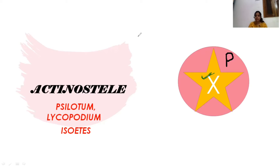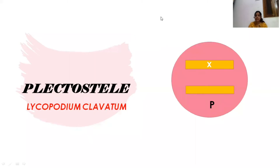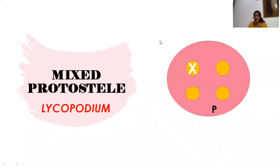The third type is plectostele. This plectostele has the xylem in the form of plates. Plecto means plate-like — found in species of Lycopodium, for example Lycopodium clavatum. Then we have mixed protostele, where the xylem is present in the form of circular patches — four xylem patches present in between the phloem. Such type of mixed protostele is found in Lycopodium species like Lycopodium cernua.